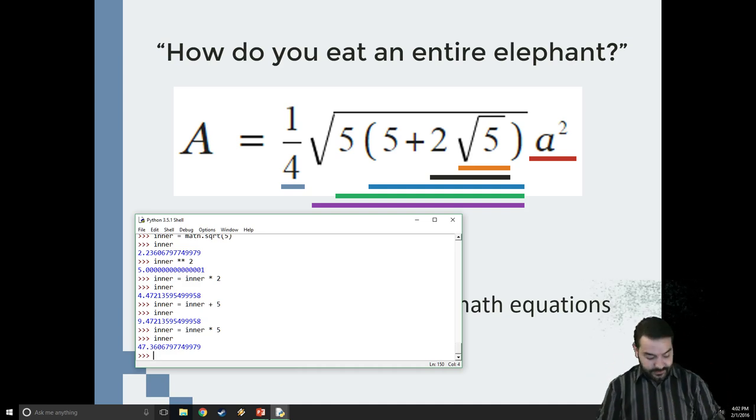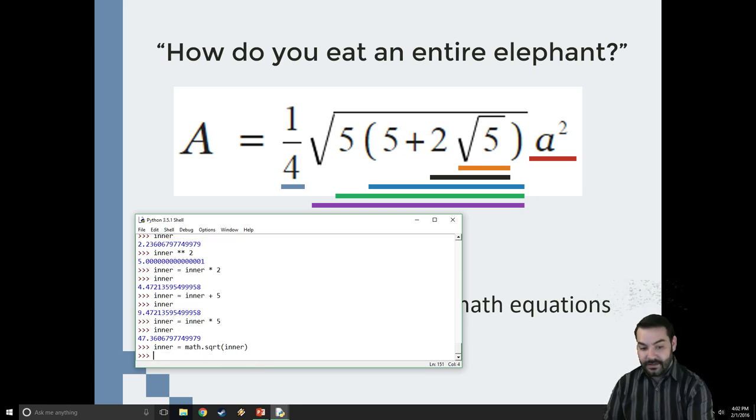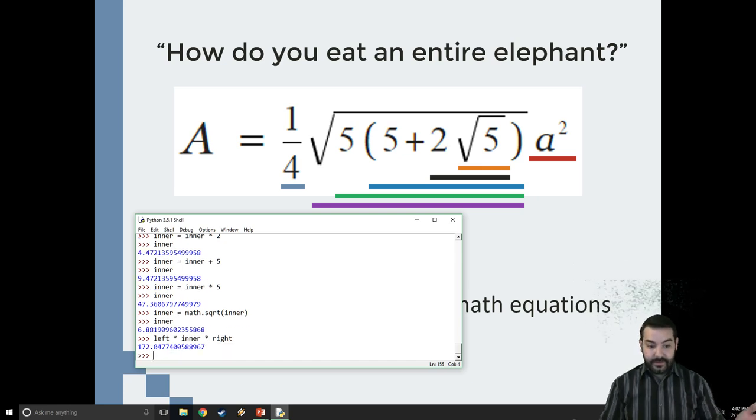Now, finally, we hit the last little bit. Inner equals, and instead of it being a math equation, I'm able to come in and go math.sqrt, just like I did before, of inner. And so this will give me some weird, crazy 6.88 number. And I can then, in turn, take this and say left times inner times right. And what this should give me is 172.4 something.